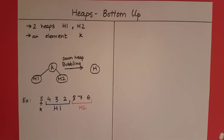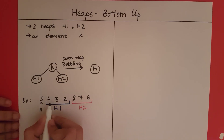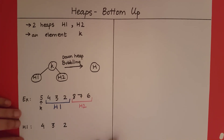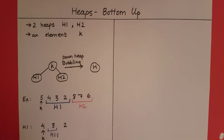Now I have to make these three elements a heap. Let's look at how to make 4, 3, and 2 a heap — this is what is going on in h1. I apply the same steps: the first element, 4, becomes k. The first half of the remaining elements is h1.1 and the second half is h1.2.